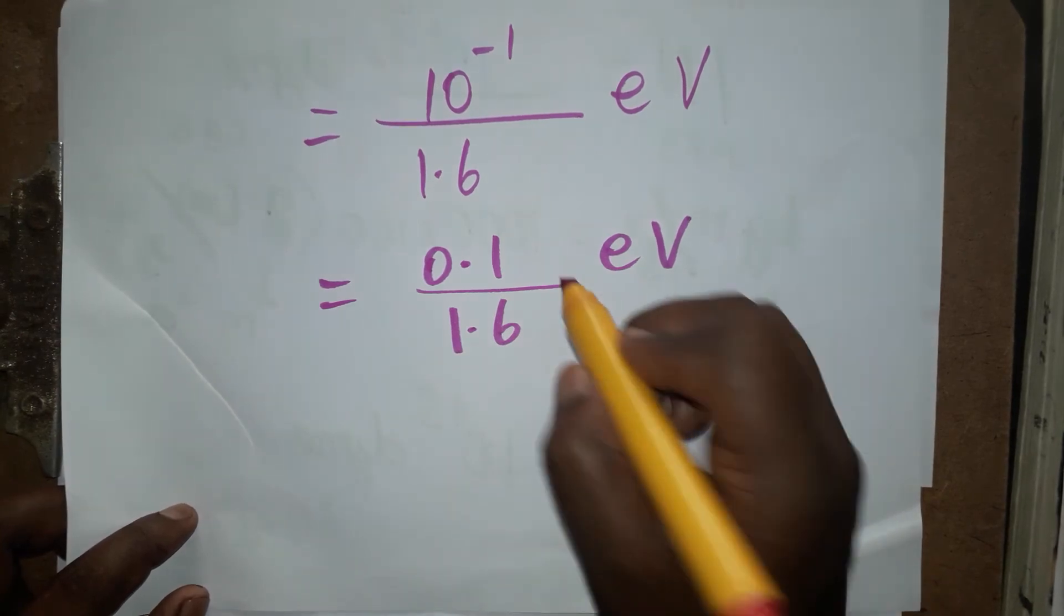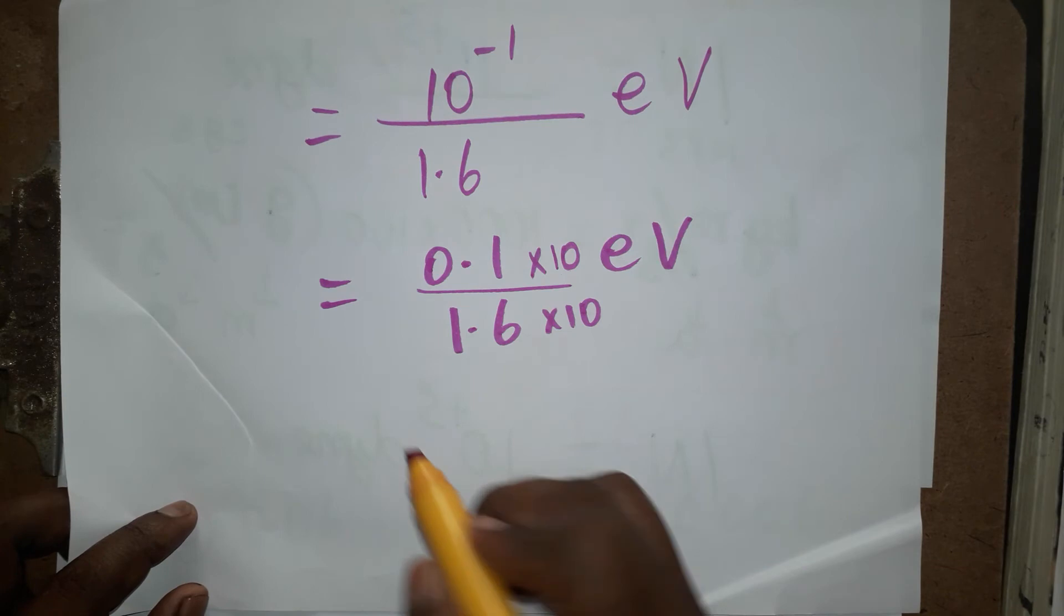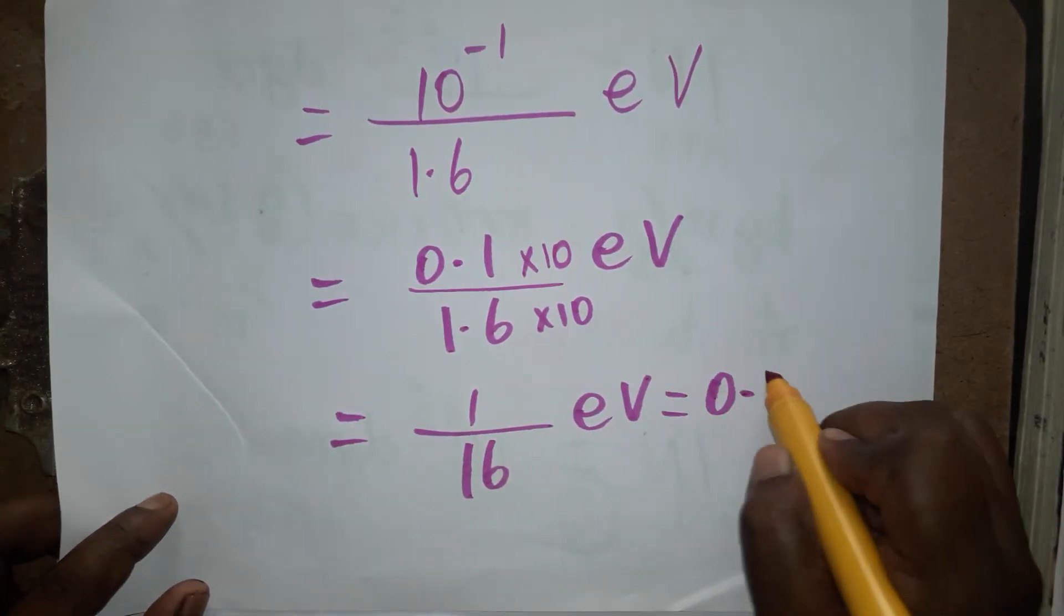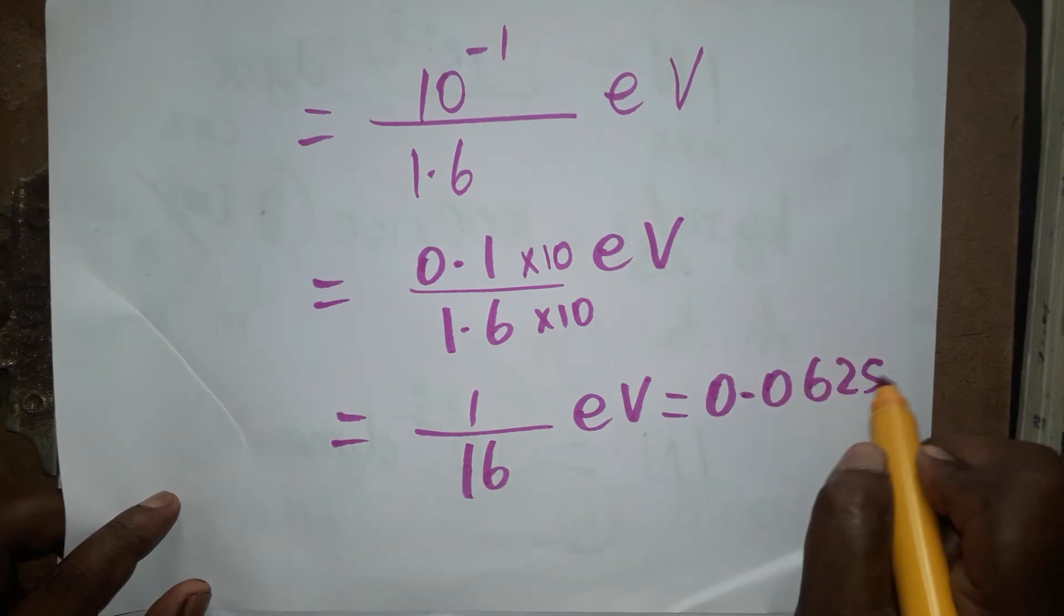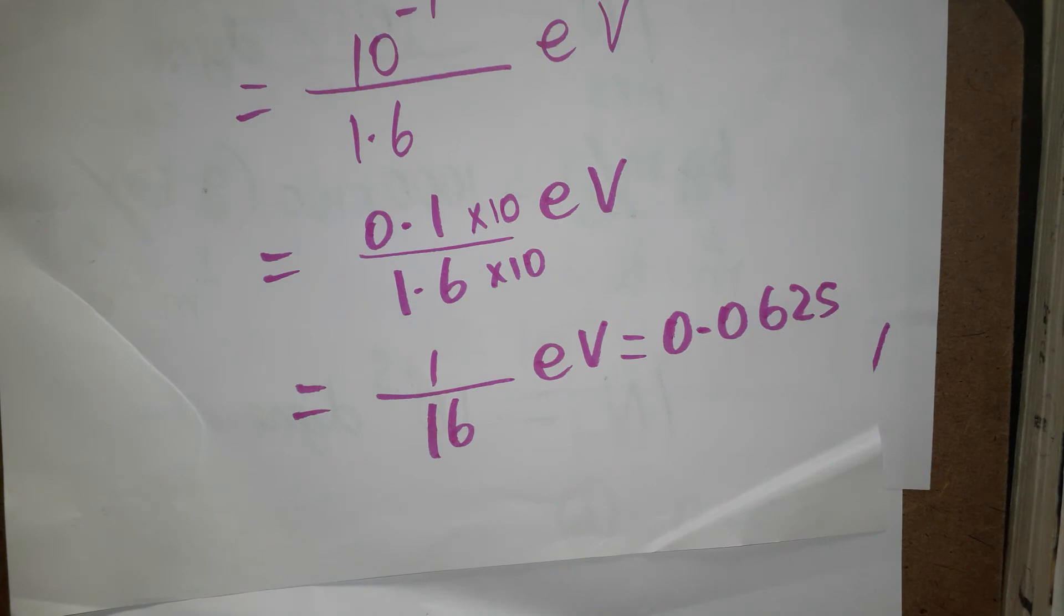Multiplying to remove the decimal gives us 1 divided by 16 eV, which equals 0.0625 eV. If you round this number, the digits 2 and 5 - no need to write because they're less than 5.